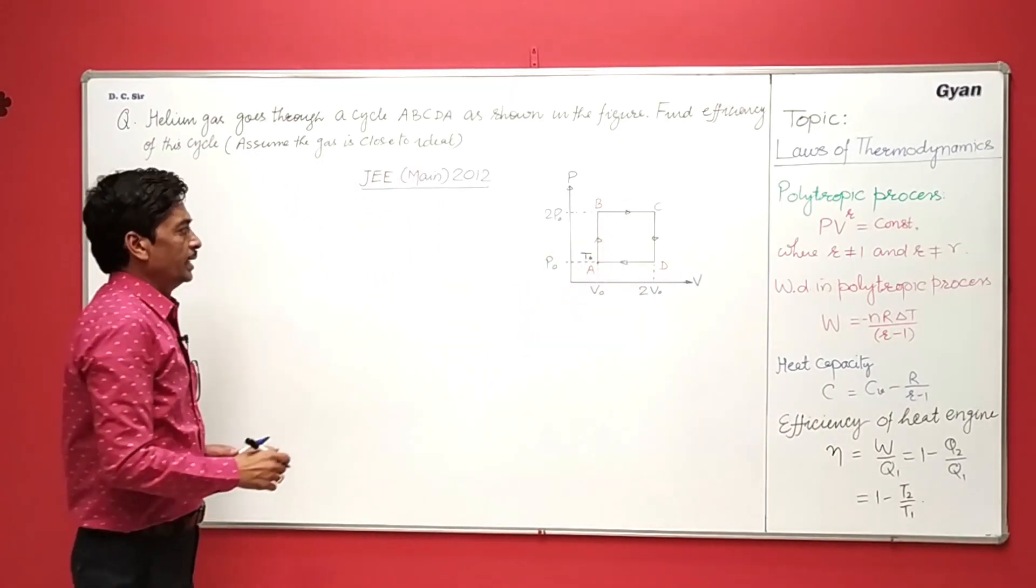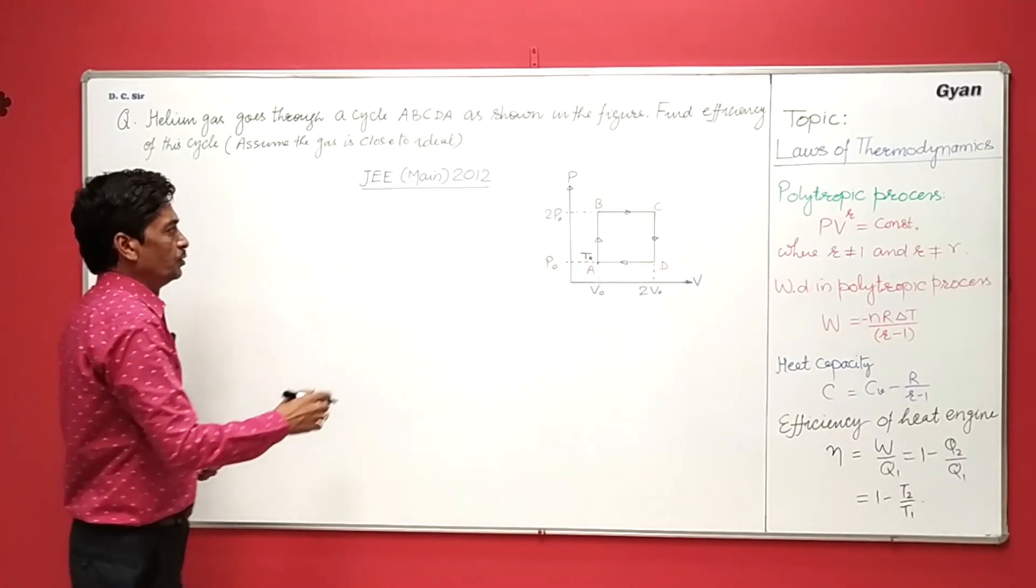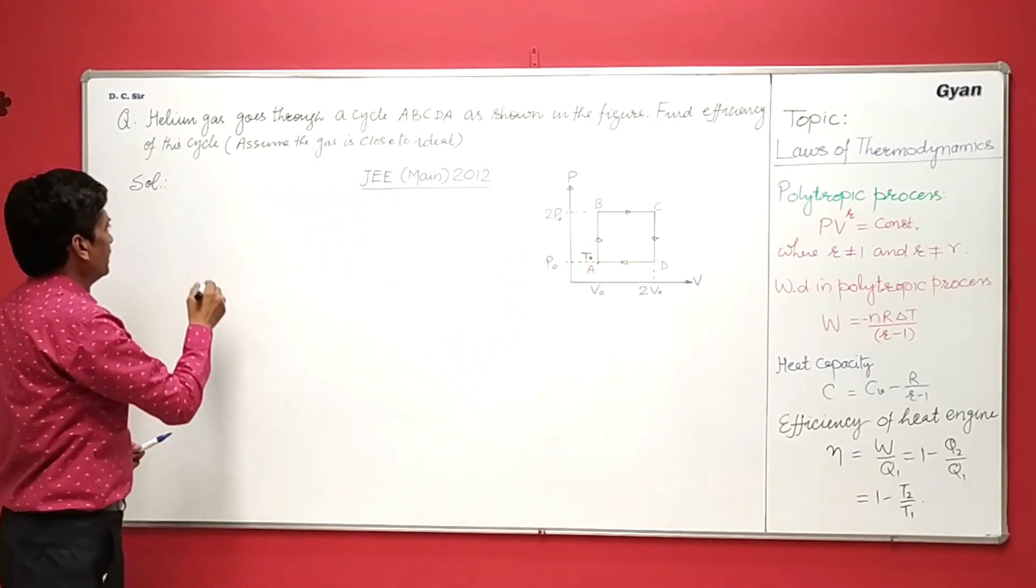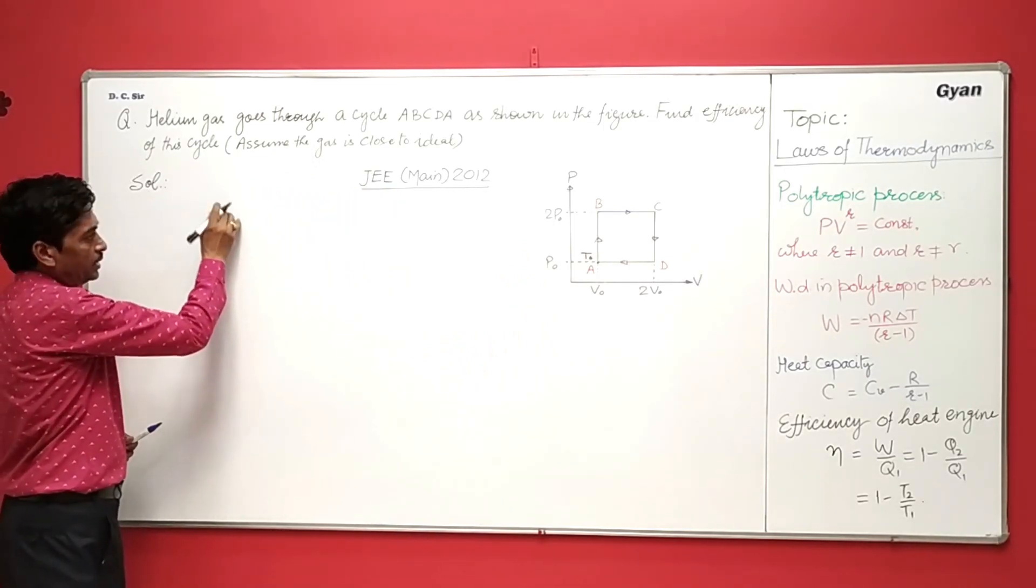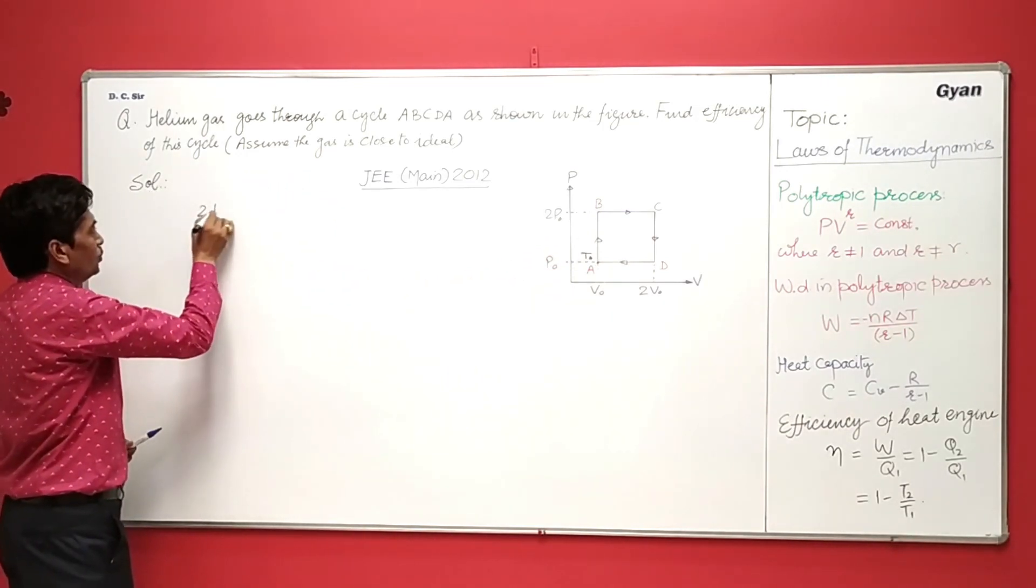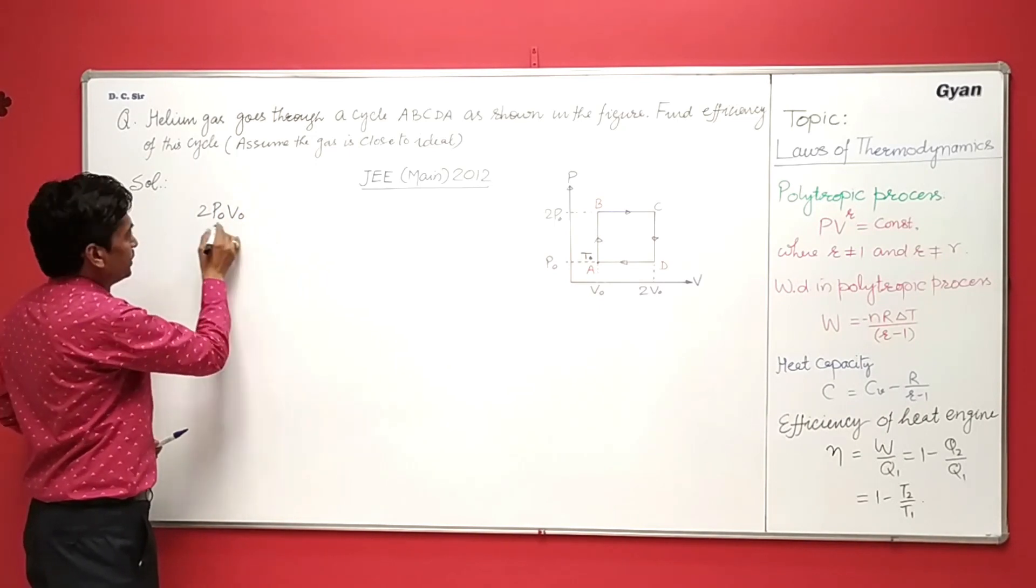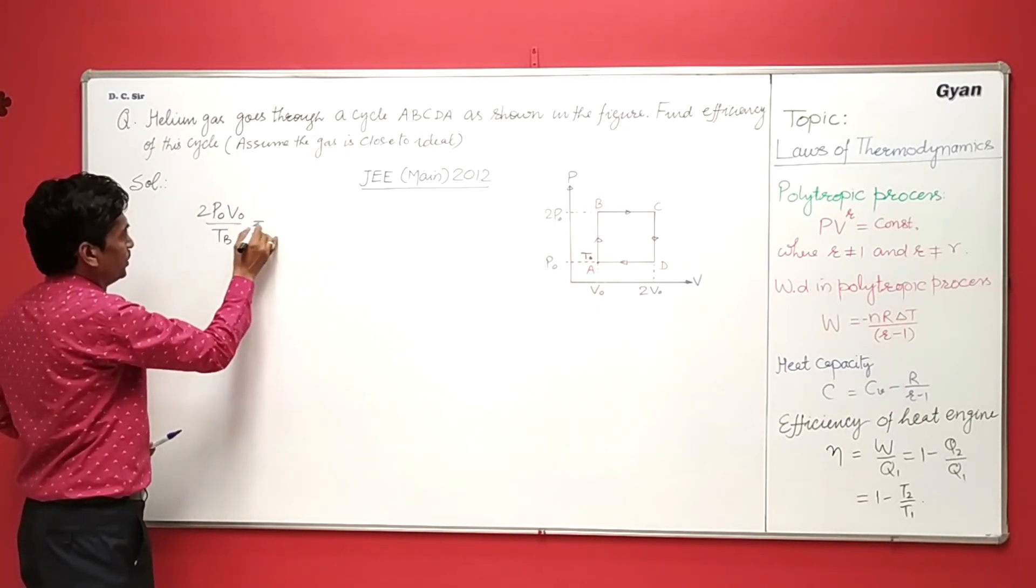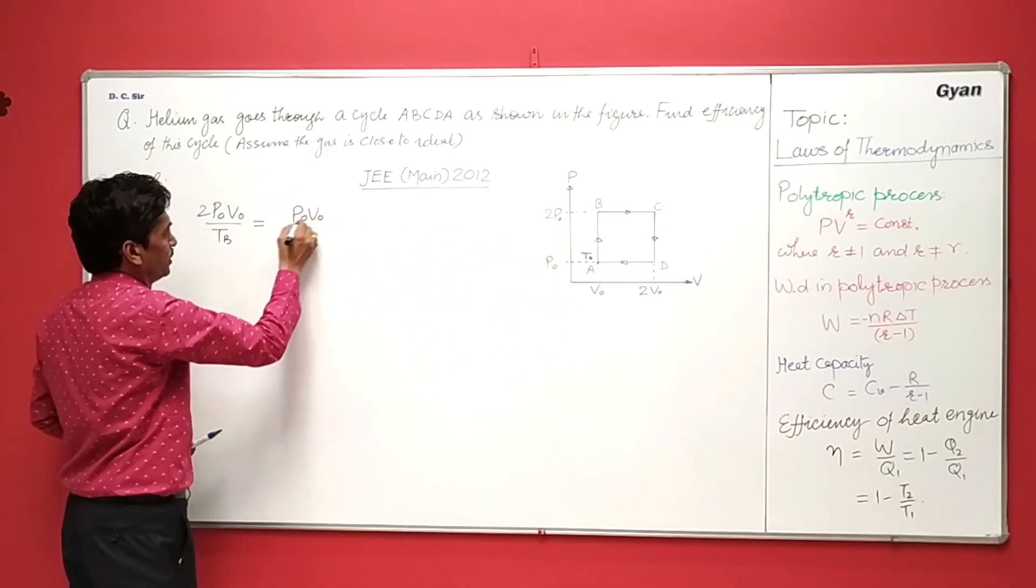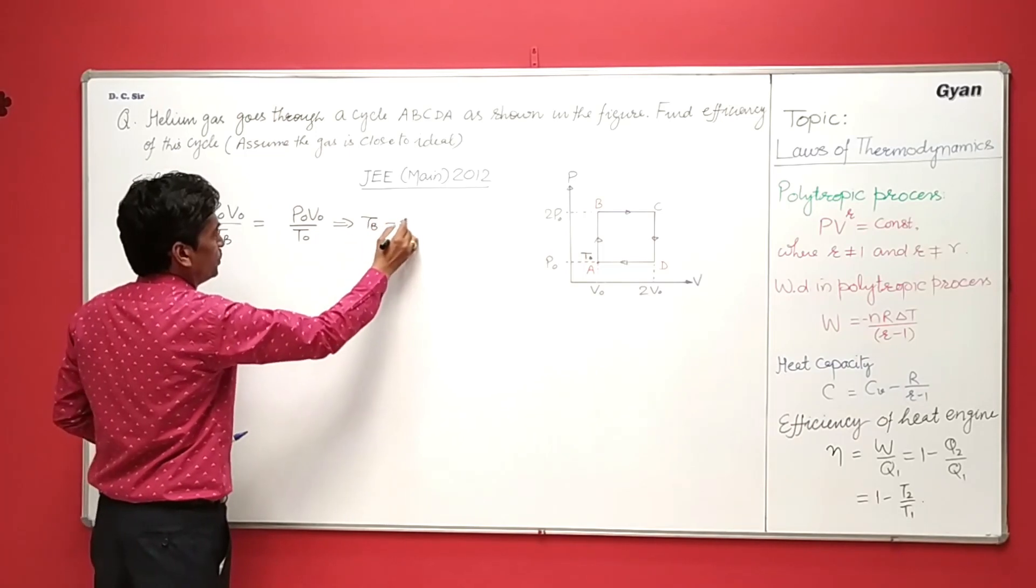Now let us assume the temperature at A is equal to T0. So we have to find the temperature at B and C. To get the temperature at B we can use P, that is here the pressure is 2P0 and volume is V0. So 2P0V0 divided by Tb is equal to at point A, here the pressure is P0, V0 upon T0. So this will be Tb is equal to 2T0.